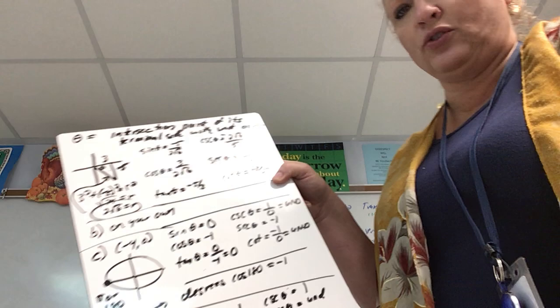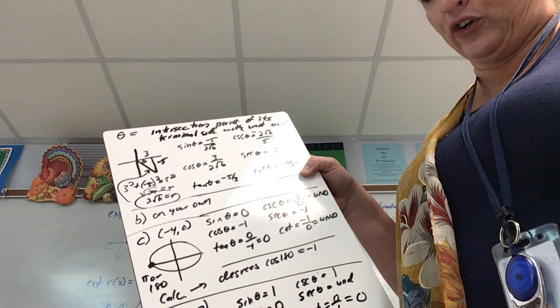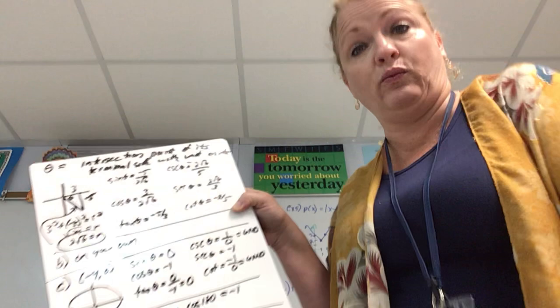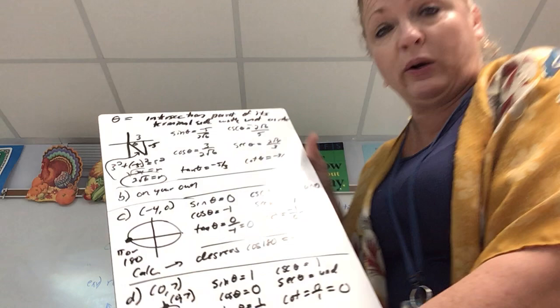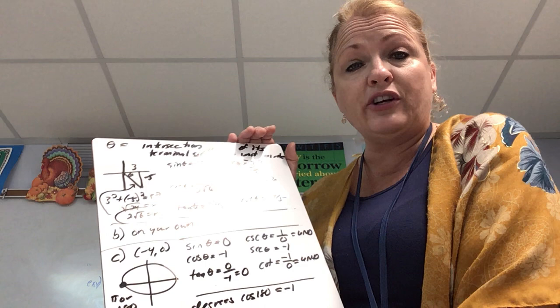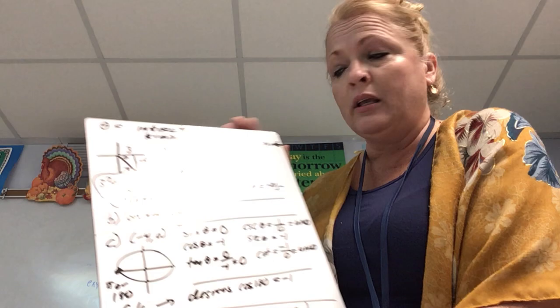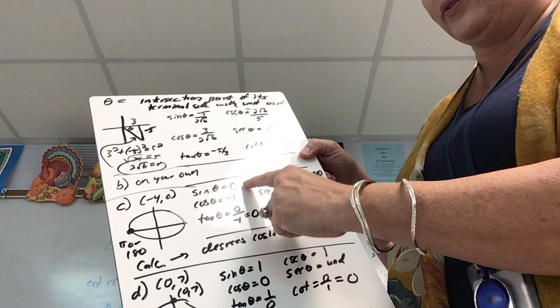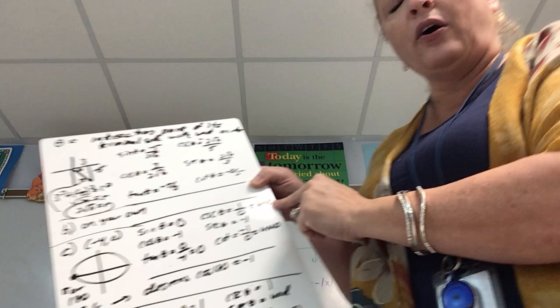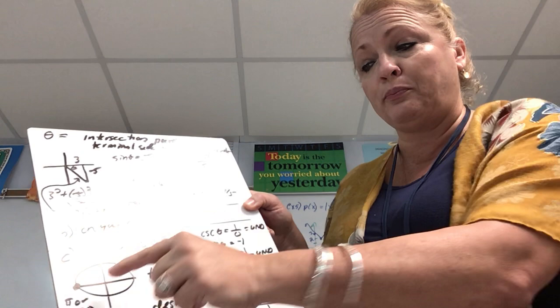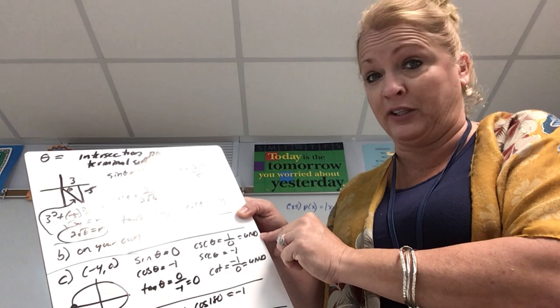For part c, set up all six trig ratios where the point intersects the circle at (-4, 0). We don't have a triangle here — technically this is a quadrantal angle because it is on one of the axes. So we use the fact that cosine is x, sine is y, and tangent is sine over cosine, or y over x. Sine of theta is the y-coordinate, which is zero. The reciprocal, cosecant, is 1/0, which is undefined.